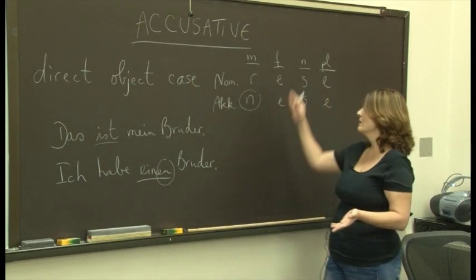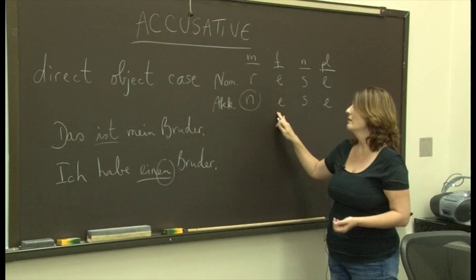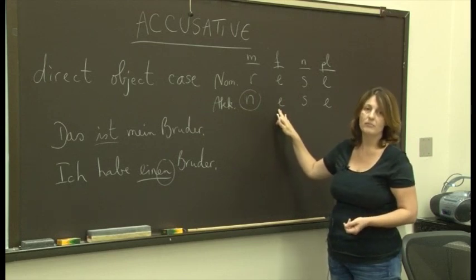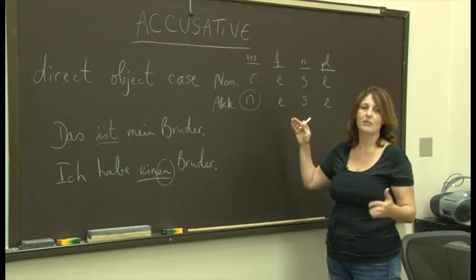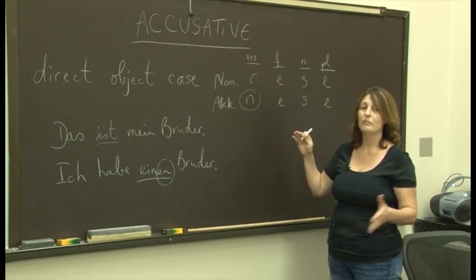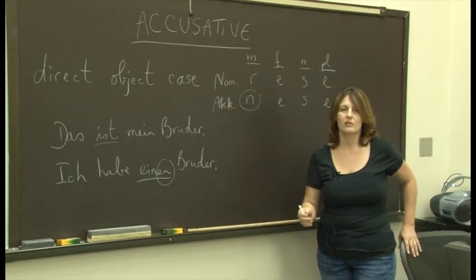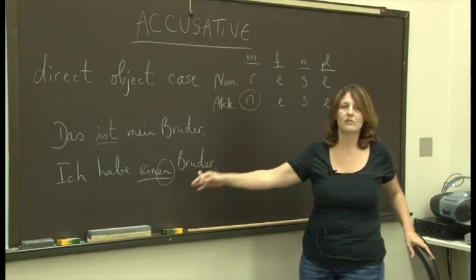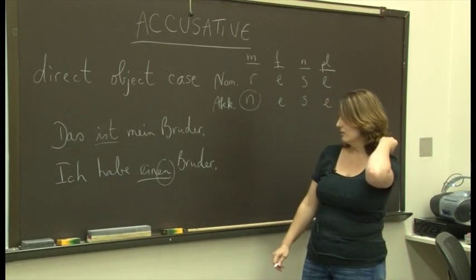Accusative. However, for Schwester, feminine, nothing changes. Das ist meine Schwester. Ich habe eine Schwester. Nothing changes for something neutral, like Kind. Ich habe ein Kind. Das ist mein Kind. So only the masculine changes, and everything turns into en endings. Okay, good.